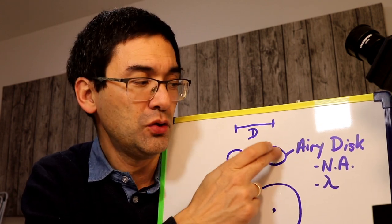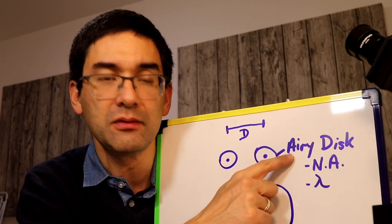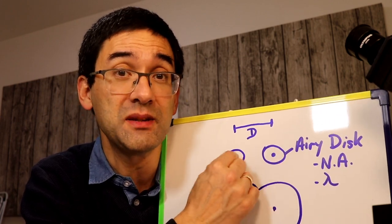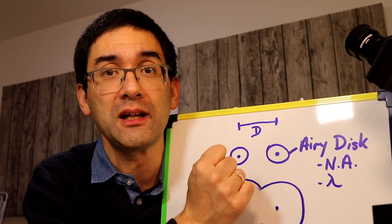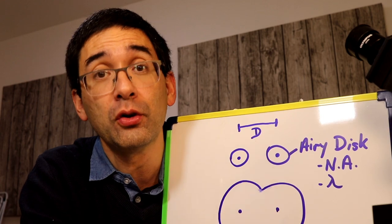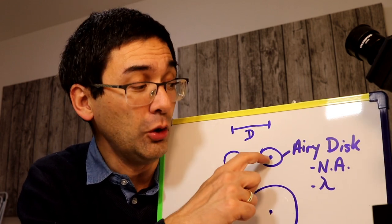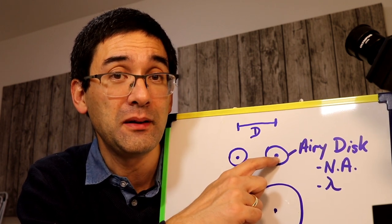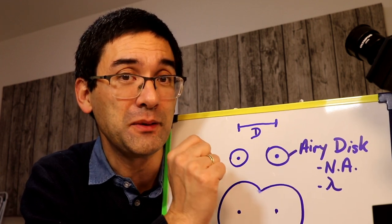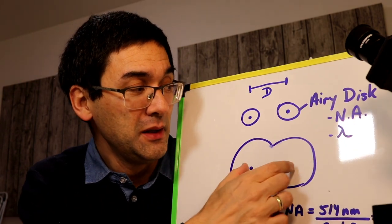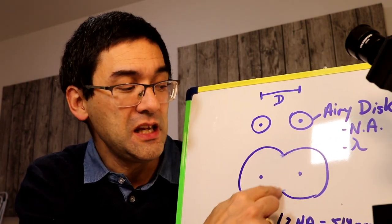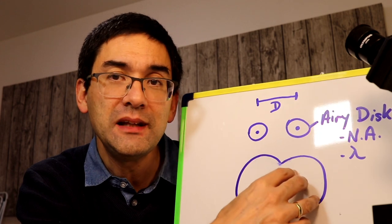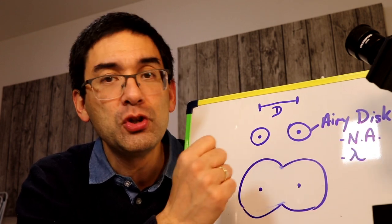These fuzzy areas are called Airy discs. When they're far apart, they're separated and I'm still able to see them as two separate objects — they are resolved. Down here is a second example where the resolution is much lower: the Airy disc is much larger, and you see them overlapping. Therefore, I'm not able to see them as two separate entities but as one fuzzy spot, and the image is not resolved anymore.